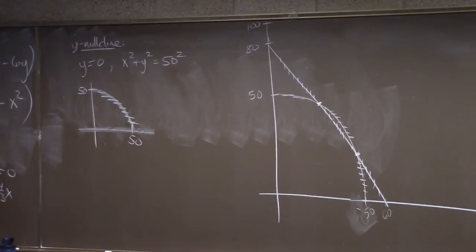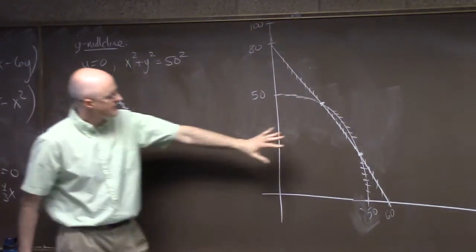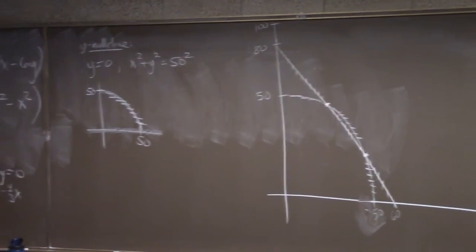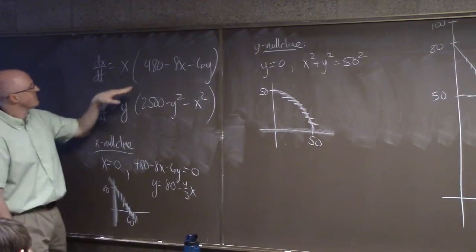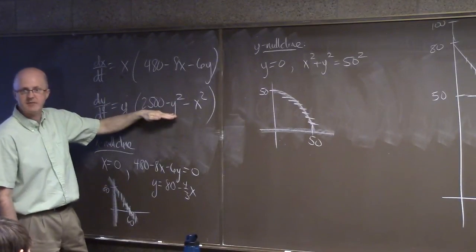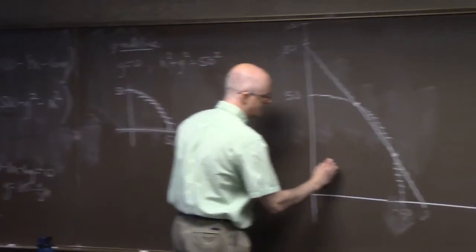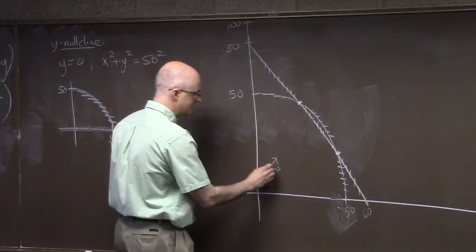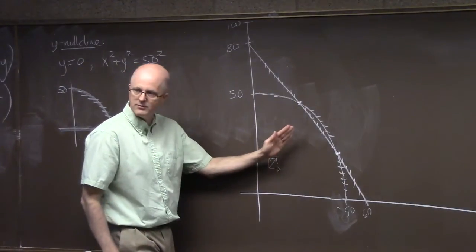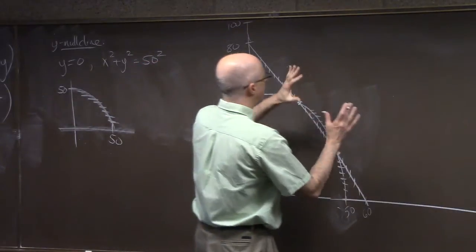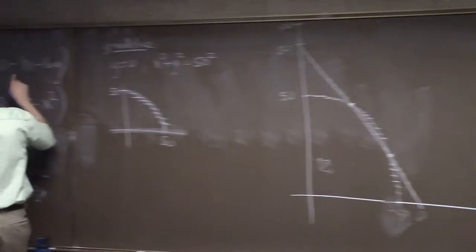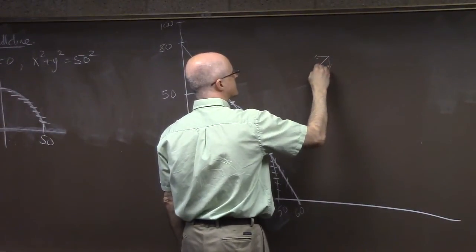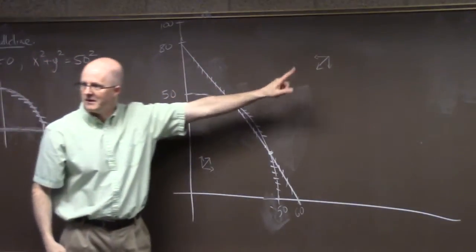If you're down near the origin, x and y are both small, so the terms inside the factored expressions are both positive — solutions move to the northeast. On the other hand, when x and y are both far from zero, both expressions become negative — solutions move to the southwest. These are just little sketches to help realize what directions to move in.